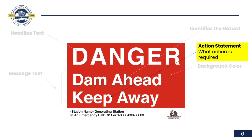The second line is where we have the opportunity to tell people what action we expect. In this case, the action we require is 'keep away' or 'keep out' — something like that.